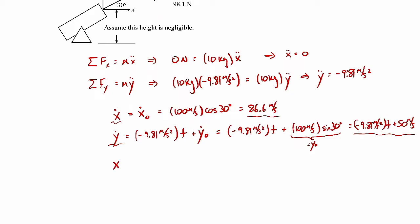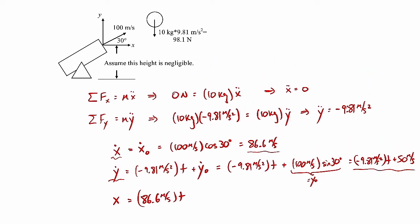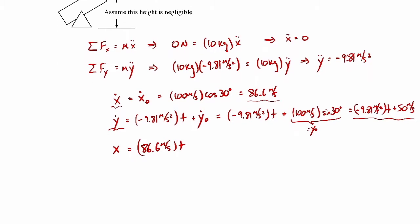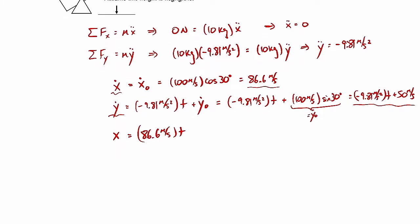Integrating one more time gives position. The x position is 86.6 m/s × t plus the initial x position, which is zero, since our coordinate system starts right at the end of the cannon. So x = 86.6t.